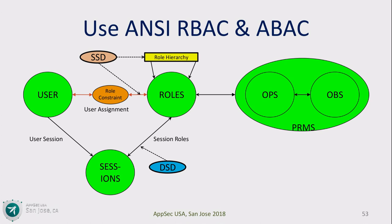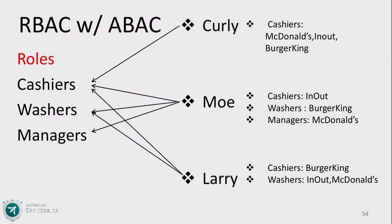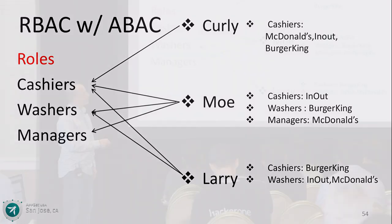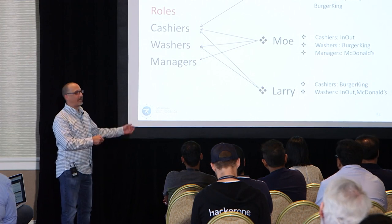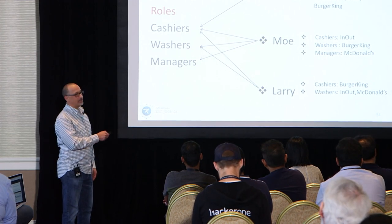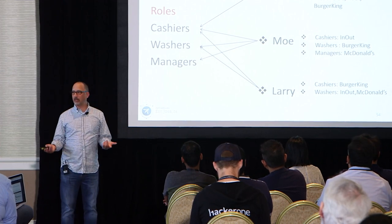The role constraint allows you in your model to specify the rules for a customer — this role must be accompanied by a customer specifier when applied to a user. Now you have just that one role — one cashier — and with that one cashier you can say that Moe is a cashier at In-and-Out. It's scoped. Because I populated that way, I can't create a session or do check access on Moe as a cashier at McDonald's.